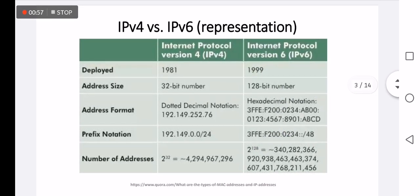IPv4 was developed in 1981, compared to IPv6 which was developed in 1999. The address size is 32 bits for v4 compared to 128 bits for v6. The address format of v4 is dotted decimal notation, compared to hexadecimal notation of v6. IPv4 prefix notation depends on classes — for example, slash 24 represents the network part of a class C — compared to slash 48 prefix notation of v6.